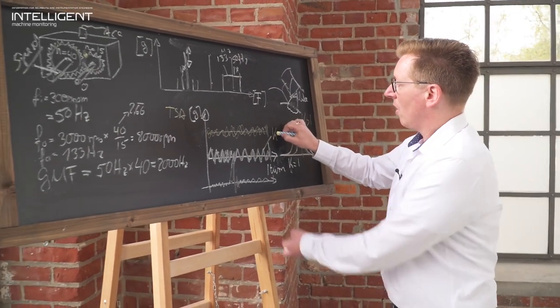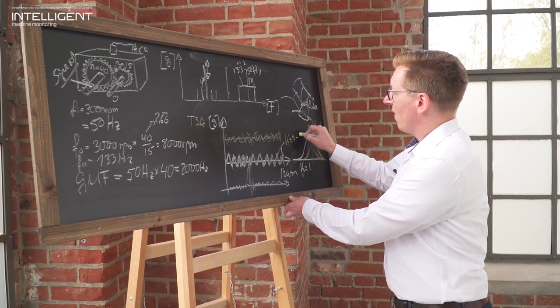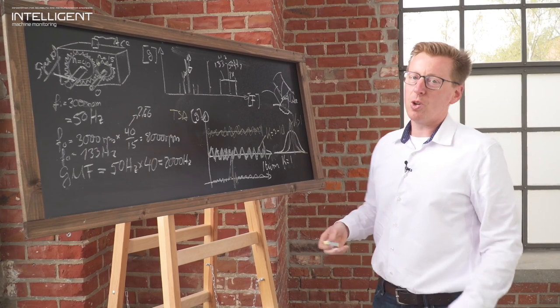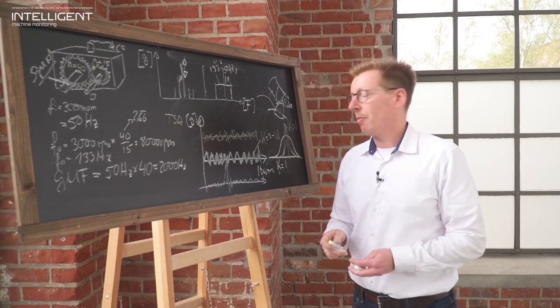When you have a broken tooth we talk about kurtosis probably close to 50 or 100, many times higher.